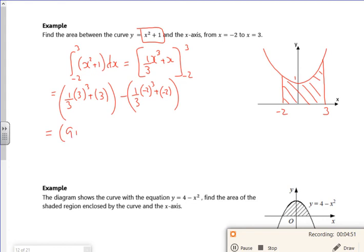So I've got 3 cubed divided by 3 is 3 squared, so that's 9 plus 3 minus 2 is 12. I've got minus 2 cubed is minus 8, so I've got minus 8 over 3 minus 2, so minus 2 is minus 6. So I've got minus 14 over 3. Minus and minus gives me 14 over 3. 12 is 36 over 3, so I've got 50 over 3.